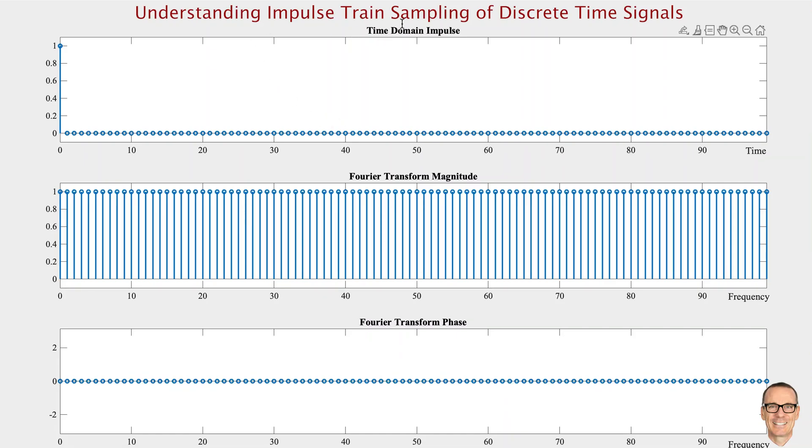Let's understand impulse train sampling of discrete time signals. Here I'm showing a single impulse in the time domain. In the frequency domain, the magnitude response shows an equal amount of all frequencies and zero phase across all frequencies.